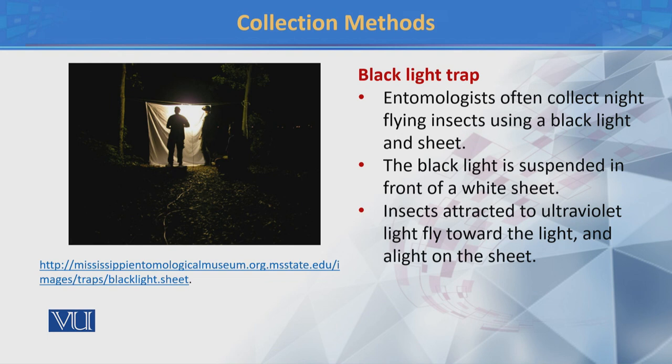First of all, the black light trap method. यह जो method है — black light trap method — यह आम तौर पर जो entomologist हैं, वो night flying insects को collect करने के लिए इस्तमाल करते हैं। इस method के अंदर एक black light जो है उसको suspend किया जाता है in front of a white sheet, और इसके करीब एक ultra violet light को hang किया जाता है। Insects इस light की तरफ attract होते हैं, और बाद में जो researcher है वो आसानी से insects को collect कर सकते हैं।